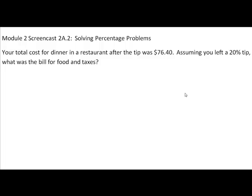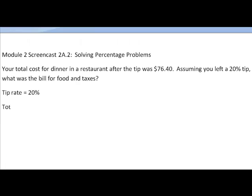We are going to start with what we know. We know that the tip rate is 20% and that the total bill was $76.40. We'll use an algebraic technique to figure out the cost of the meal including taxes. We know the total bill comprises the cost of the meal and taxes, plus the 20% tip.